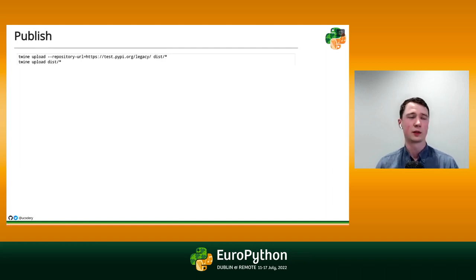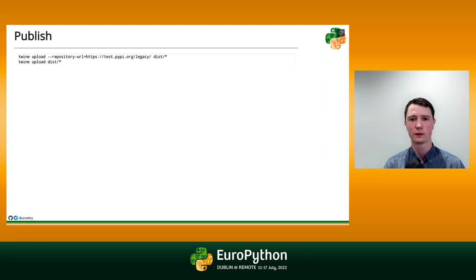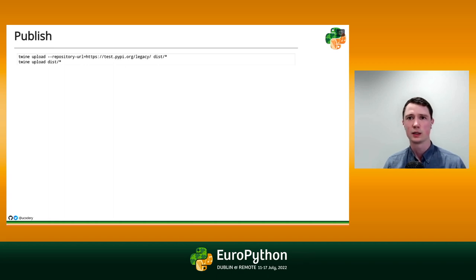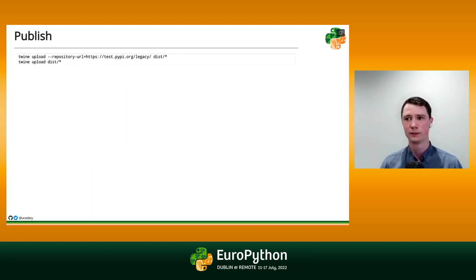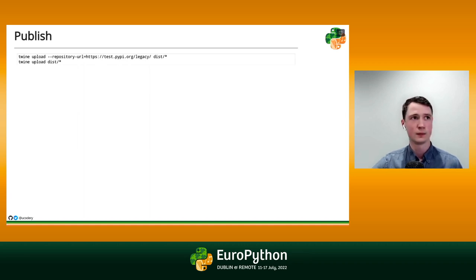These two short commands are enough to get our distribution onto pypi.org. In reality, the first command isn't even strictly necessary — it's just good practice to upload to test.pypi.org first. That's a test namespace where you can make sure your distributions aren't rejected by the API and that the project page on the website renders how you expected. If you're happy with it, then you do the real upload, which by default goes to pypi.org. One or two commands and you're published.